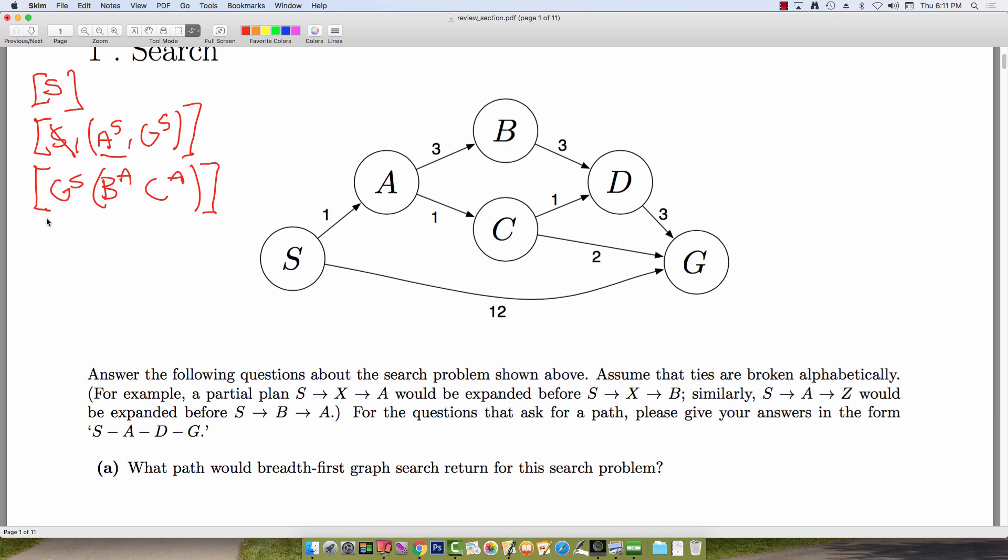At the next step, I pull off G, which came from S. And then because that's the goal node, I'm already done. In order to trace back the path, I can just say that from G, I came from S by looking at that backtracking pointer at the top. And then that's the final path returned by this algorithm. So that would just be S-G.